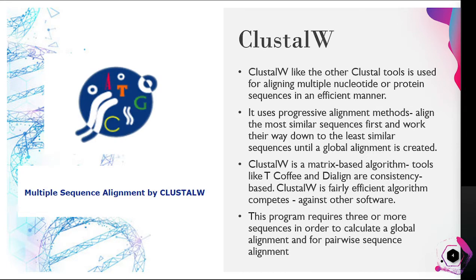Genome Net is one of the bioinformatics databases with tools. ClustalW, like other cluster tools, is used for aligning multiple nucleotide or protein sequences in an efficient manner. It uses a progressive alignment method, aligning the most similar sequences first and working down to the least similar until a global alignment is created. ClustalW is a matrix-based algorithm tool, like T-Coffee and DIALIGN.